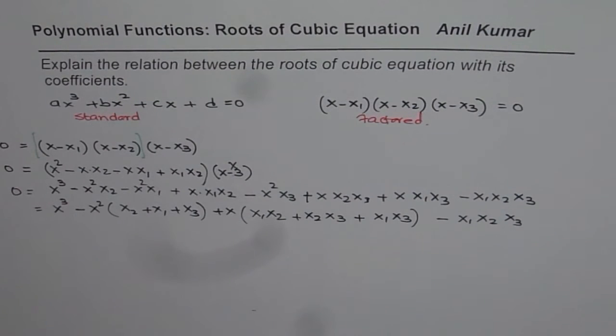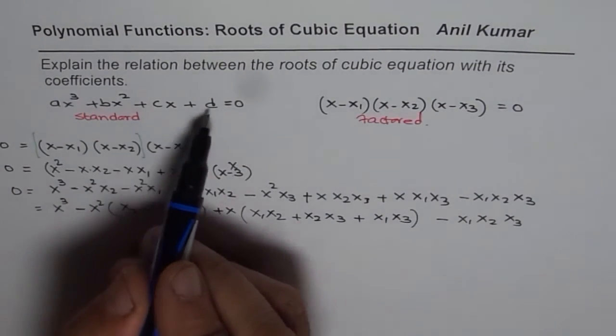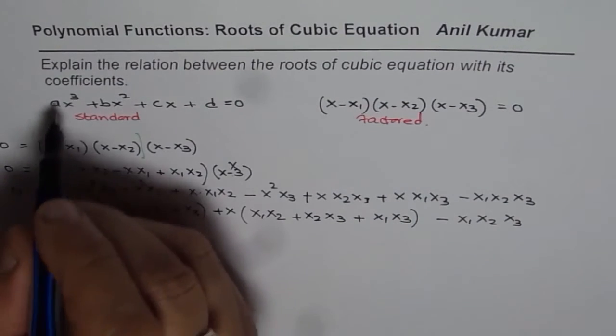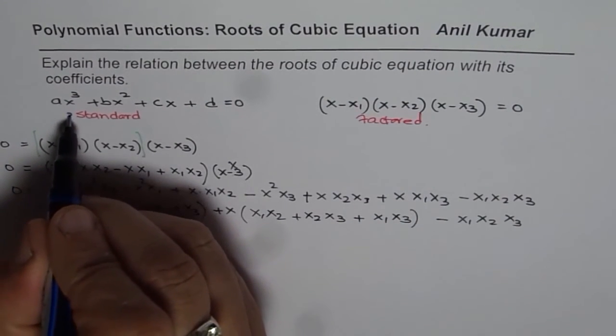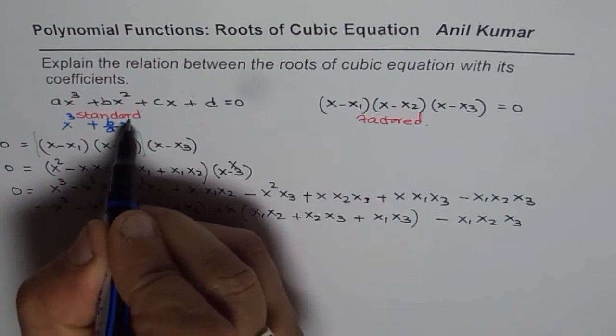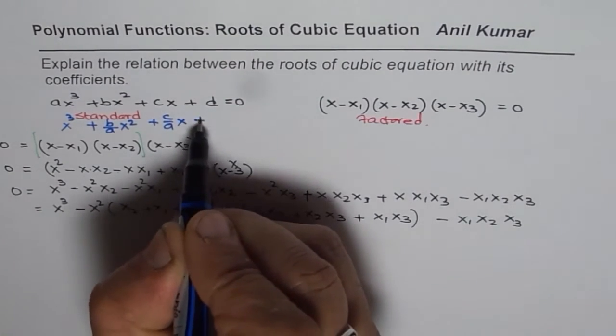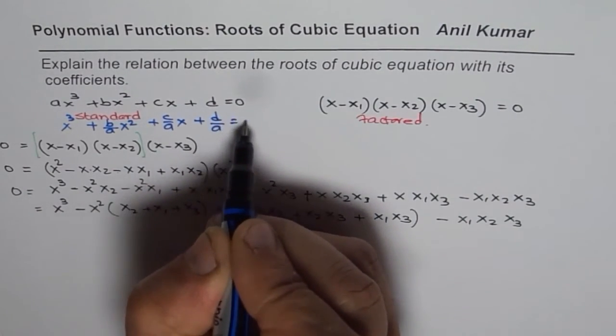Now if you try to relate these terms with the standard form what do you notice? Well let me first rewrite this standard form dividing by A. So if I divide by A then I get x³ + (b/A)x² + (c/A)x + (d/A) = 0.